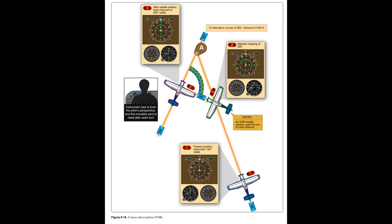DME Components. VOR-DME, VORTAC, ILS-DME, and LOC-DME navigation facilities established by the FAA provide course and distance information from collocated components under a frequency pairing plan. DME operates on frequencies in the UHF spectrum between 962 MHz and 1213 MHz. Aircraft receiving equipment that provides for automatic DME selection assures reception of azimuth and distance information from a common source when designated VOR-DME, VORTAC, ILS-DME, and LOC-DME are selected. Some aircraft have separate VOR and DME receivers, each of which must be tuned to the appropriate navigation facility. The airborne equipment includes an antenna and a receiver.